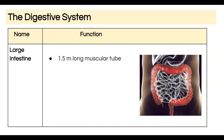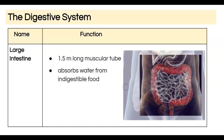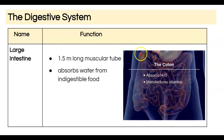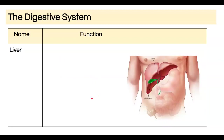One and a half meters is about four and a half feet, giving a total intestinal tract length of about 22 and a half feet combining the small and large intestines. In this part of the digestive system we're absorbing water from indigestible food and getting ready to expel any waste material, which then moves into the rectum and anus.